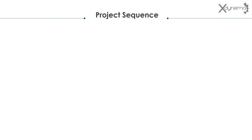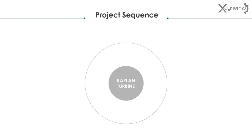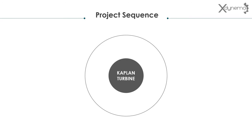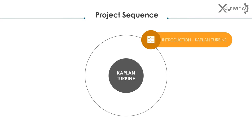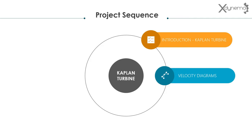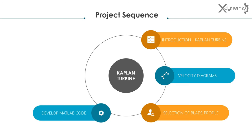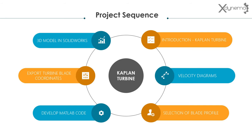Here is the project sequence. We will go through the introduction to Kaplan turbine. Then we will understand the velocity diagrams in detail. The next step is to select a suitable blade profile. Using fluid mechanics equations, we will develop a MATLAB code to generalize the design process. The turbine blade coordinates are exported to a text file, and using these coordinates, the 3D model of Kaplan turbine runner is designed in SOLIDWORKS.